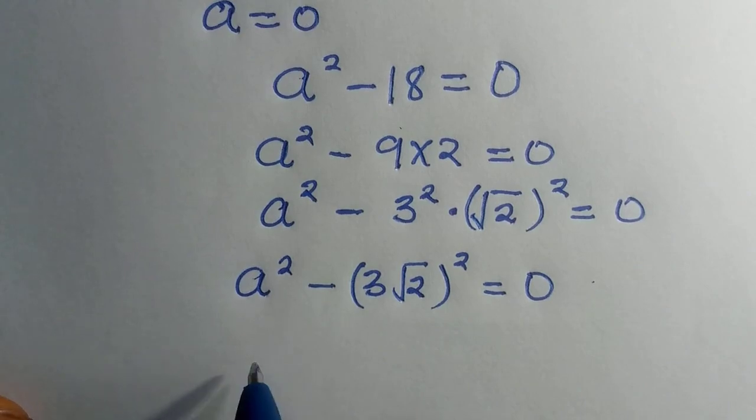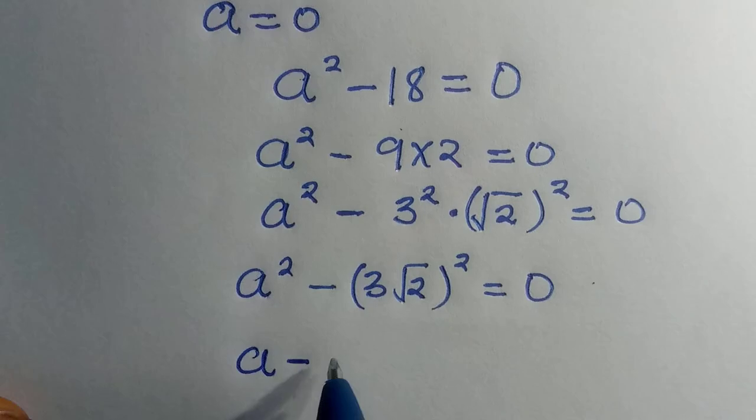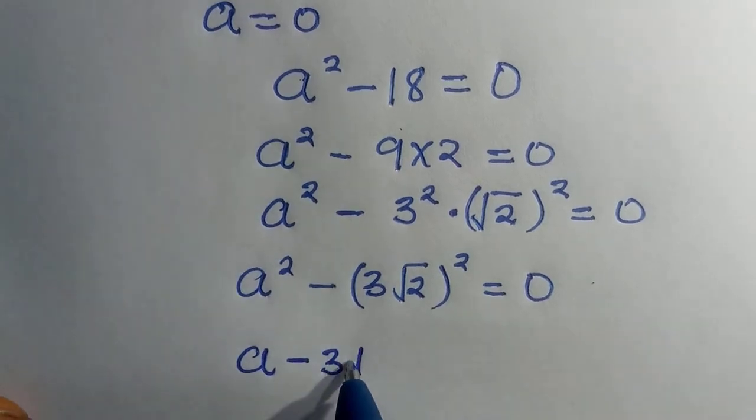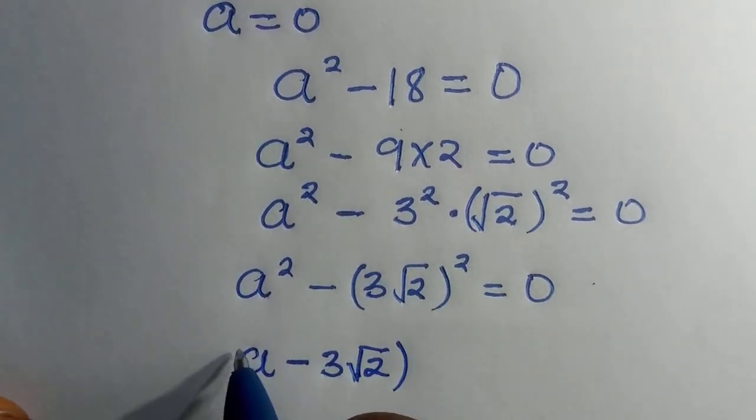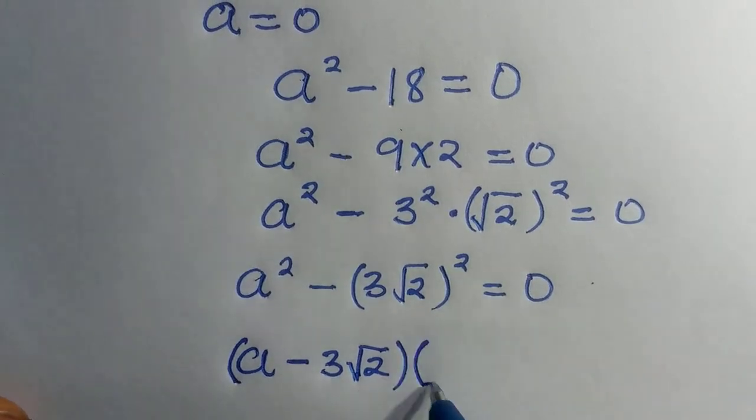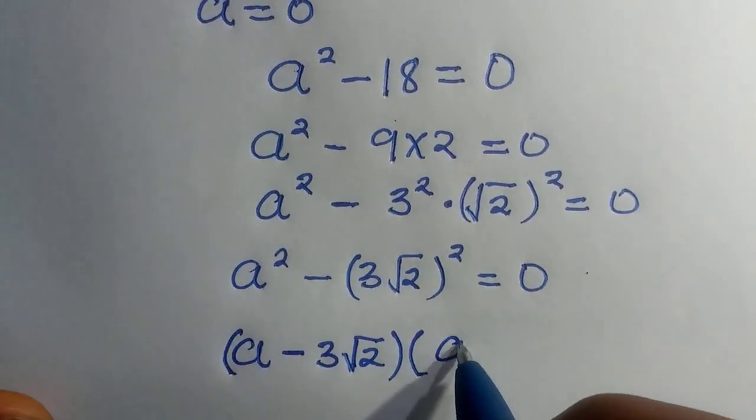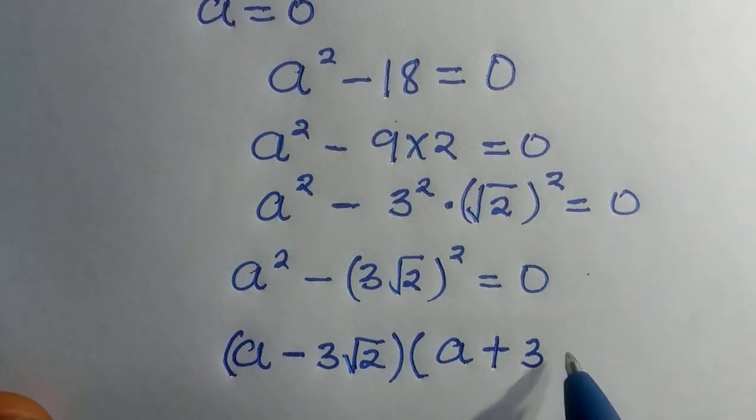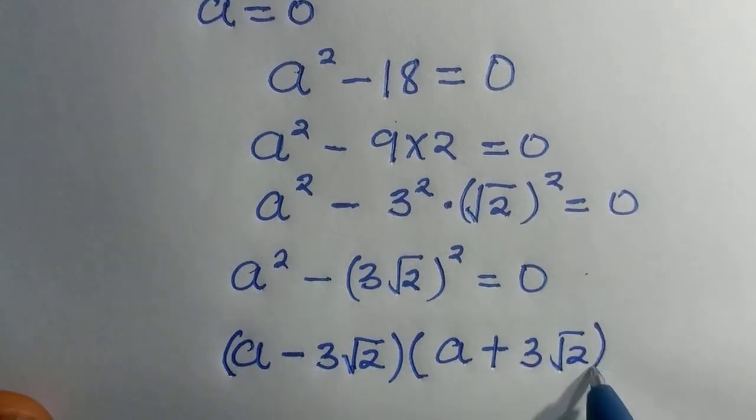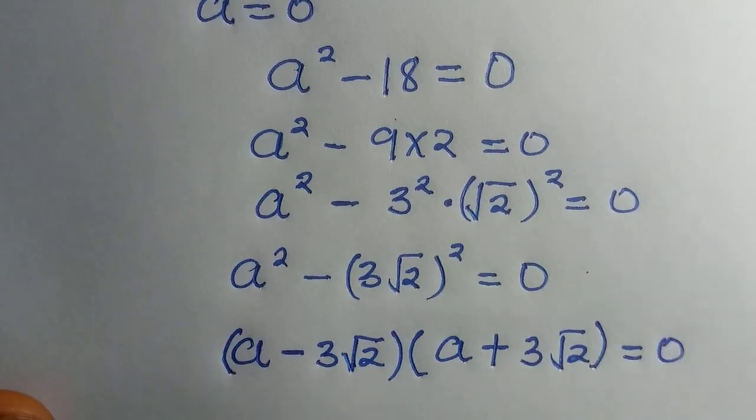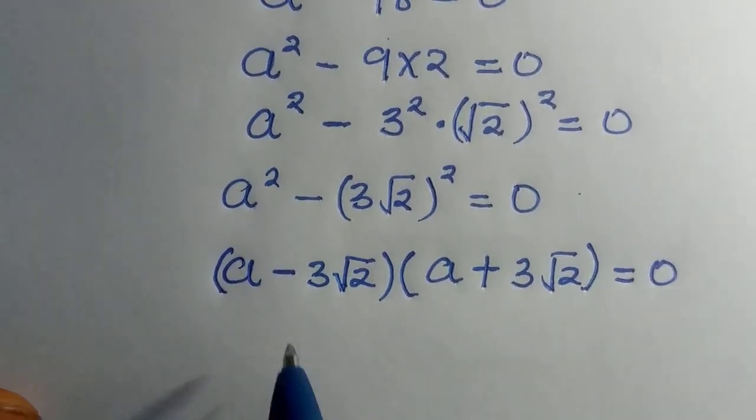We are going to write it as a minus 3 root 2 in bracket. Then we also consider the positive part, which is a plus 3 root 2 equals 0.